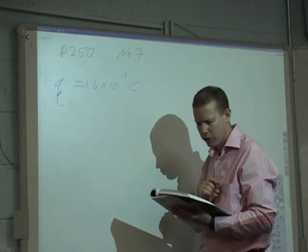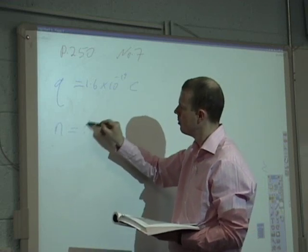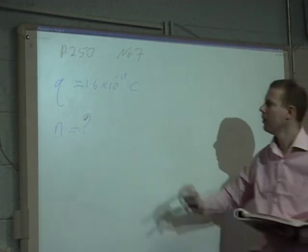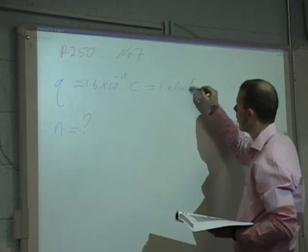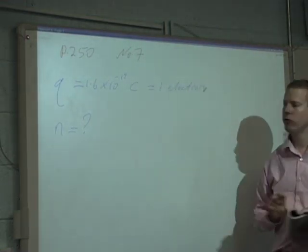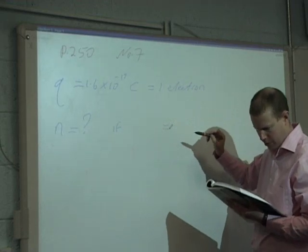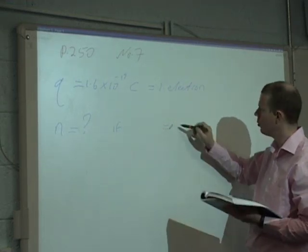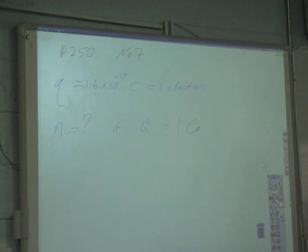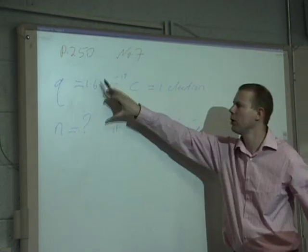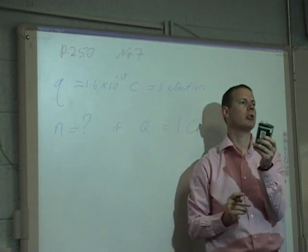How many electrons are needed to give a charge of 1 Coulomb? What am I looking for? I'm looking for N — a number. So N equals question mark. To give a charge of 1 Coulomb, N equals question mark. All the information is there: you've got 1 Coulomb, you've got 1 electron, and its charge is 1.6×10⁻¹⁹ Coulombs.